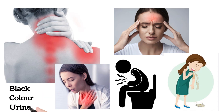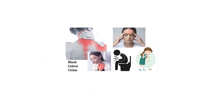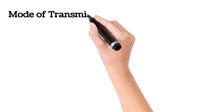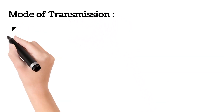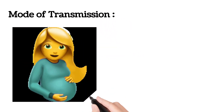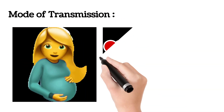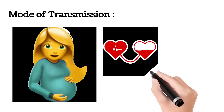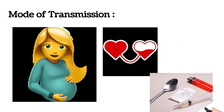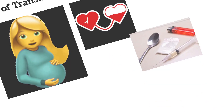Along with these symptoms, there may be black colored urine. Malaria can also be transmitted from mother to unborn child, by blood transfusion, and by sharing needles.